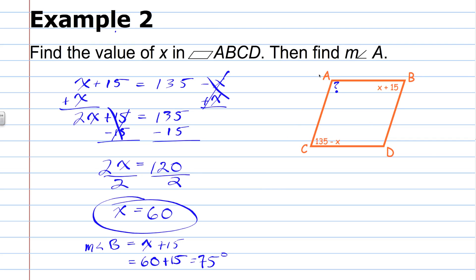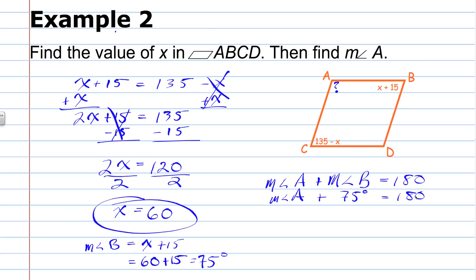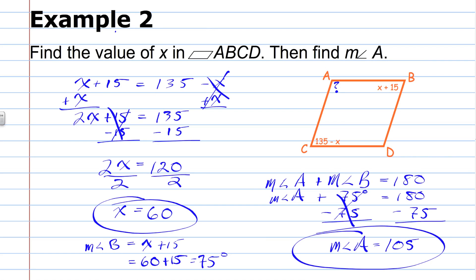To find the measure of angle A, we first find the measure of angle B by substituting 60 into X plus 15: 60 plus 15 equals 75, so angle B is 75 degrees. Since A and B are consecutive angles, they are supplementary: the measure of angle A plus 75 equals 180. Subtracting 75 from both sides, the measure of angle A is 105 degrees.